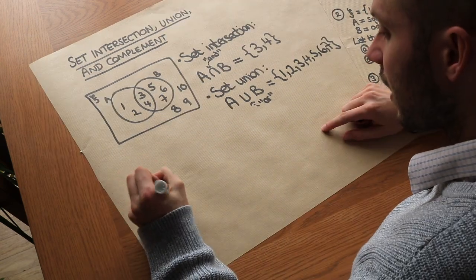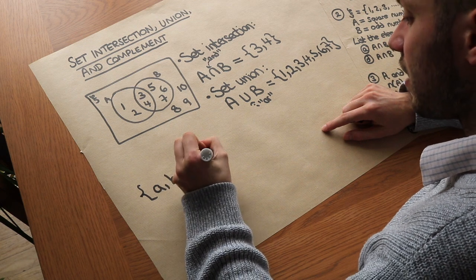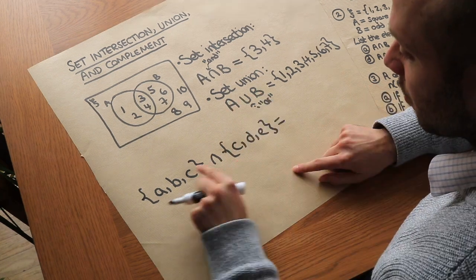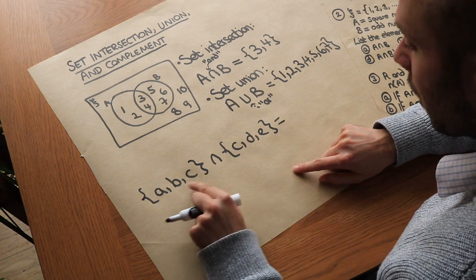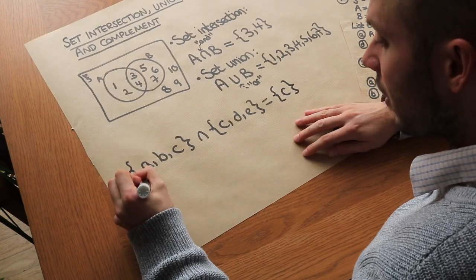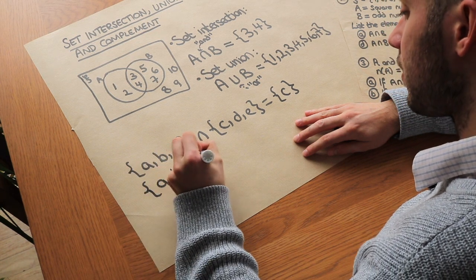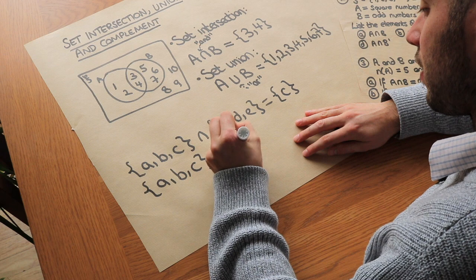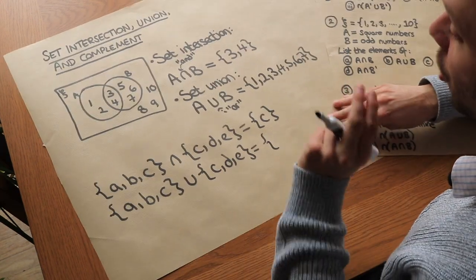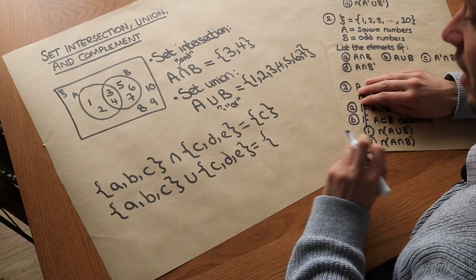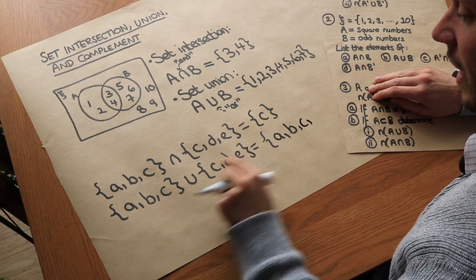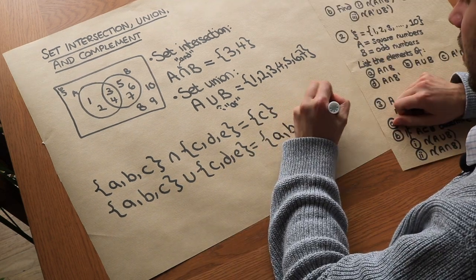For example, if we did {A, B, C} intersection {C, D, E}, we're looking for things in both sets. Only C is in both, so we get the set {C}. And for the union of {A, B, C} with {C, D, E}, we write things which occur in either set. Remember, sets are not allowed to contain duplicates, so we don't write C twice. We get {A, B, C, D, E}.